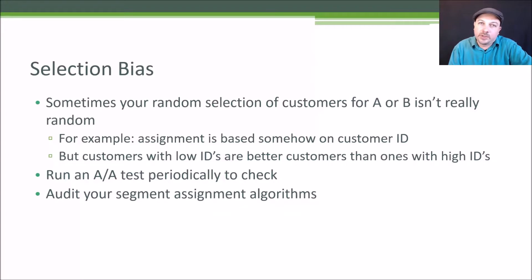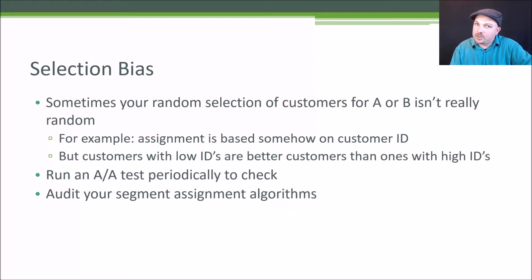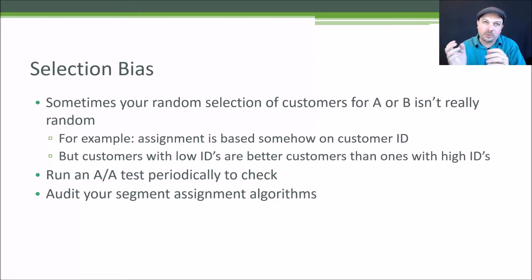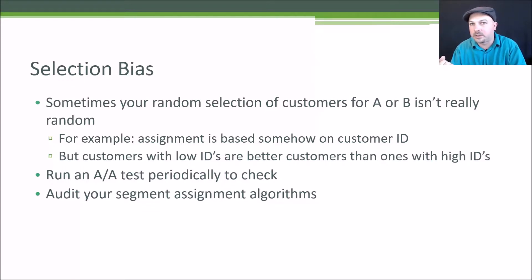Another potential issue that can skew your results is selection bias. It's very important that customers are randomly assigned to either your control or your treatment group — your A or your B group. But there are subtle ways in which that random assignment might not be random after all. For example, if you're hashing your customer IDs to place them into one bucket or the other, maybe there's some subtle bias between how that hash function affects people with lower customer IDs versus higher customer IDs. That might have the effect of putting all of your long-time loyal customers into the control group and your newer customers into your treatment group, so what you end up measuring is just a difference in behavior between old customers and new customers.